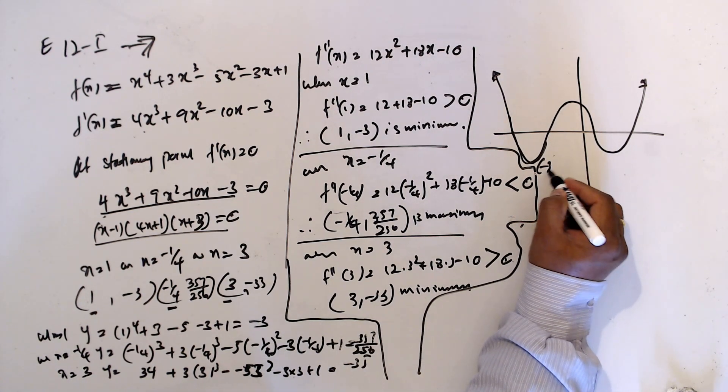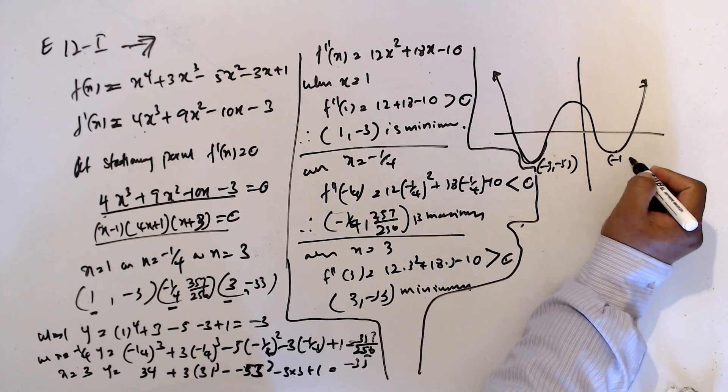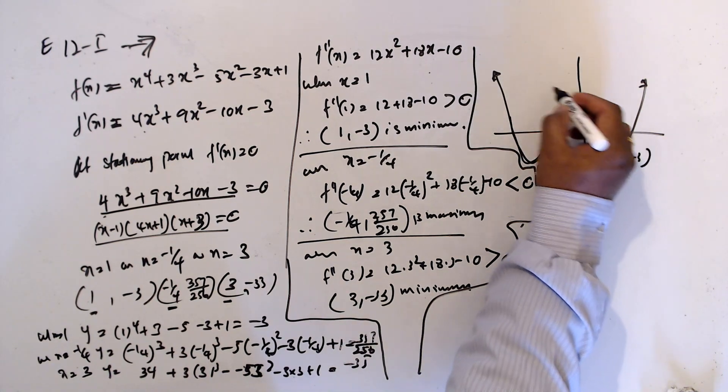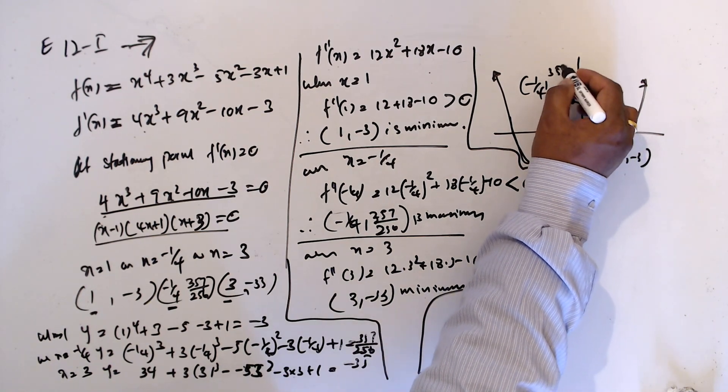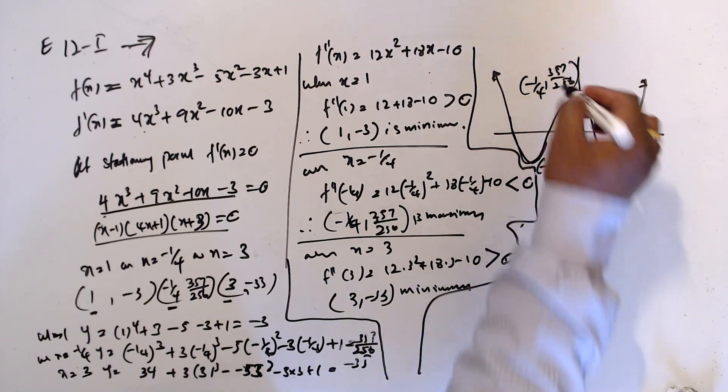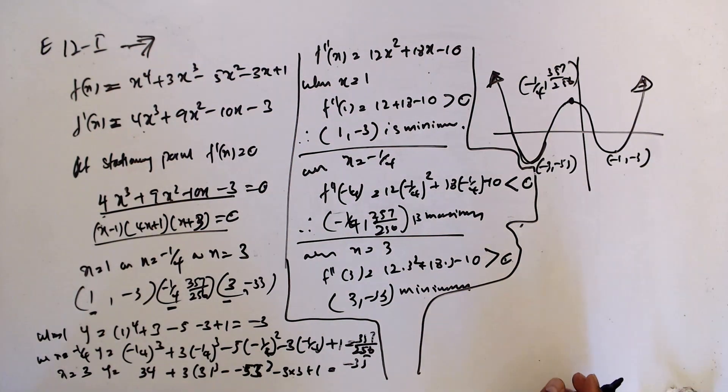Minus 3, minus 35, minus 1, minus 3, and this one minus 1/4, 357/256. Minus 2, minus 3 x 4 also.